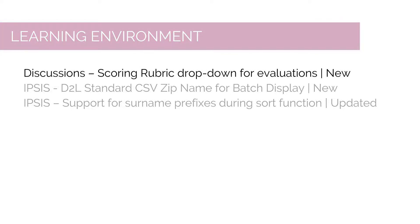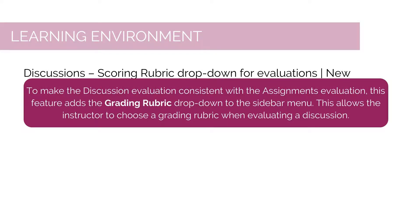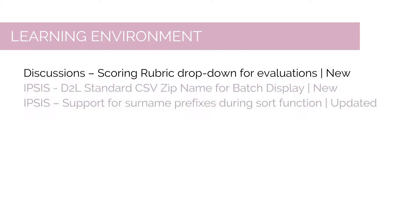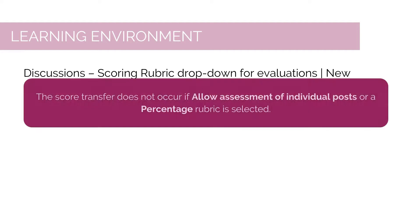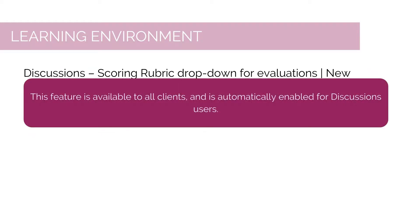To make the discussion evaluation consistent with Assignments evaluation, this feature adds a Grading Rubric drop-down to the sidebar menu, allowing the instructor to choose a grading rubric when evaluating a discussion. If a normal topic assessment with points or custom points-based rubric is selected, that rubric's score transfers to the overall grade field. Score transfer does not occur if Allow Assessment of Individual Posts or a Percentage Rubric is selected. This feature is available to all clients and automatically enabled for Discussions users.